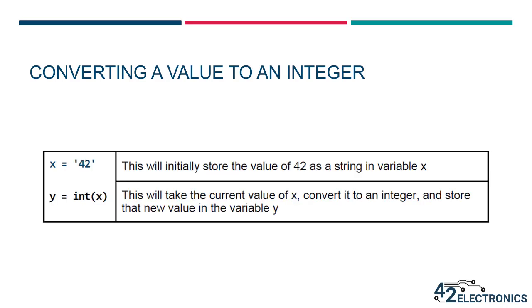Here are some more examples of converting a string to an integer. Python will initially store the value 42 as a string in variable x. But using the integer conversion command, we can convert the value of x from a string to an integer and store it as a new value in the variable y. This integer command can be really useful in activity number three for this lesson where you'll convert the numeric user input from a string to an integer so you can compare it to other numbers later in the program.